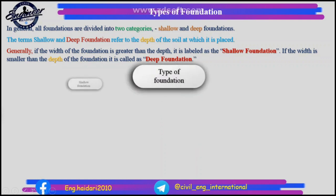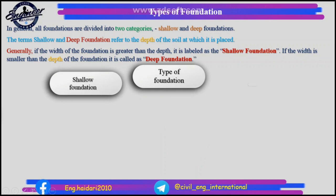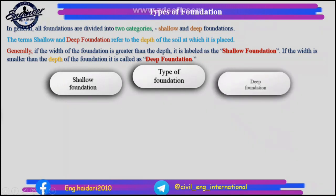Types of foundation: 1. Shallow foundation. 2. Deep foundation. Types of shallow foundation are: 1. Isolated spread footing, 2. Wall footing, 3. Combined footing.